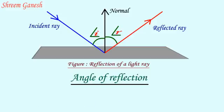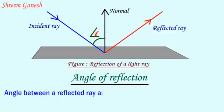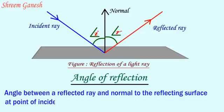Angle of reflection: Angle between a reflected ray and normal to the reflecting surface at point of incidence.